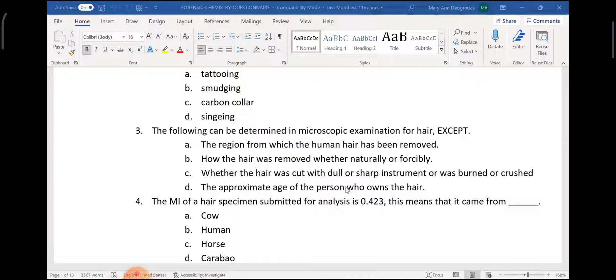A human hair has an MI less than 0.5, and for animals more than 0.5. Our question is 0.423, which is less than 0.5, that means it is human hair. Next.